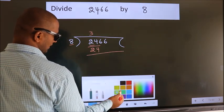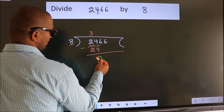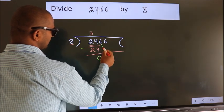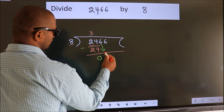Now we should subtract. We get 0. After this, bring down the beside number. So, 6 down.